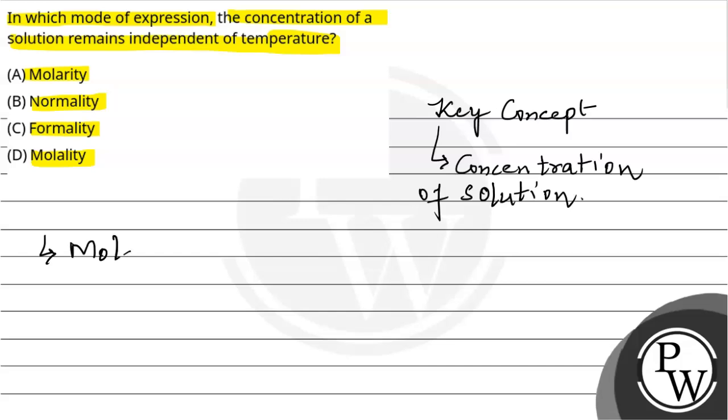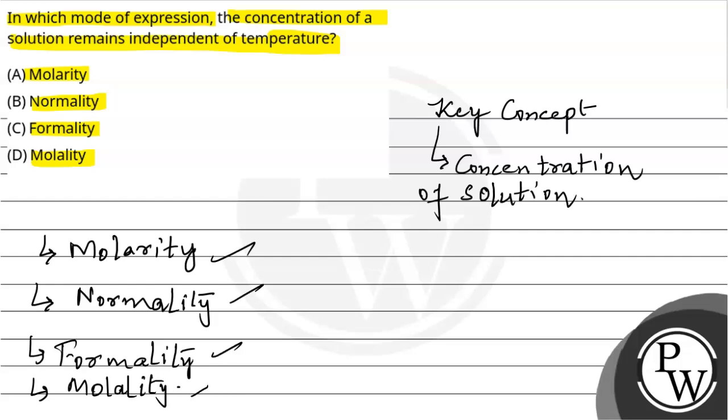that is molarity, then comes normality, then comes formality. The fourth one we use is molality. We will discuss these terms one by one in the question. So I will explain the question now.